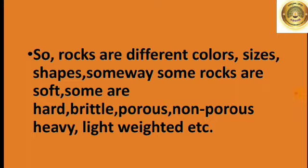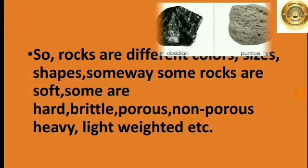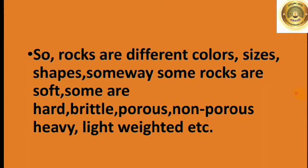For example, pumice. Some rocks are non-porous. Non-porous means rocks which do not allow liquid or air to pass — they are in one solid piece. For example, basalt and obsidian. Some rocks are light-weighted and some rocks are heavy. Like this, rocks can be seen everywhere.